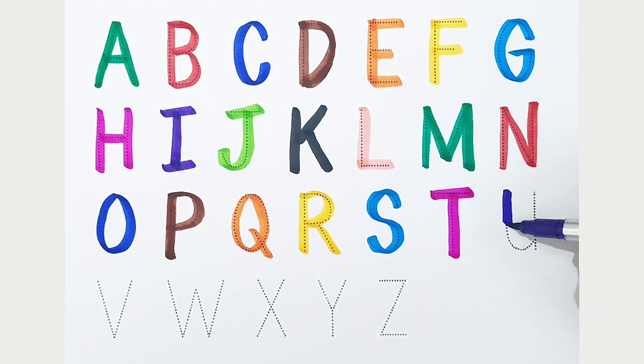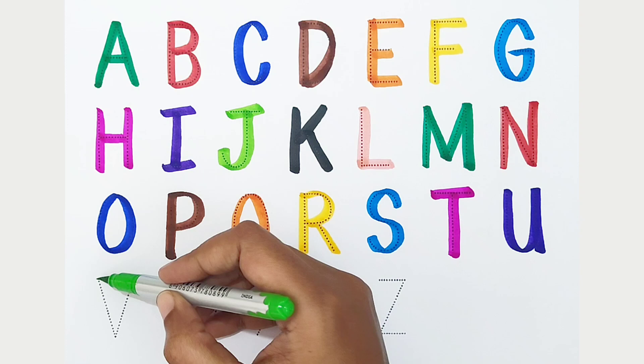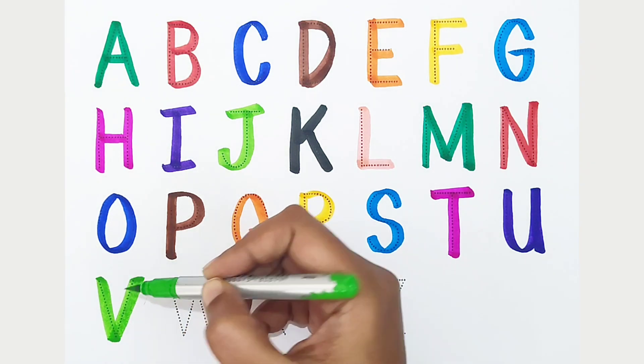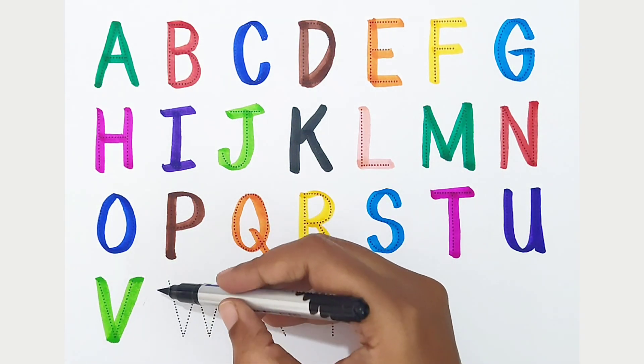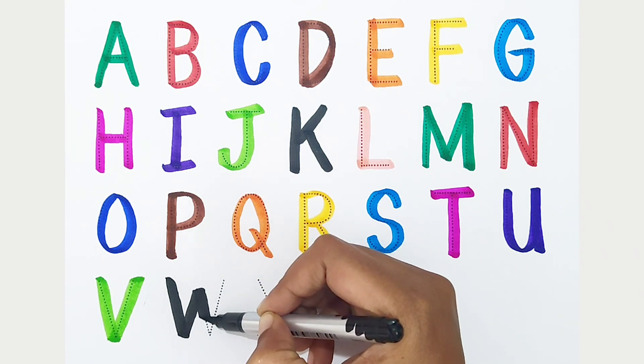U, violet color. U is for umbrella. V, light green color. V is for van. W, black color. W is for watermelon.